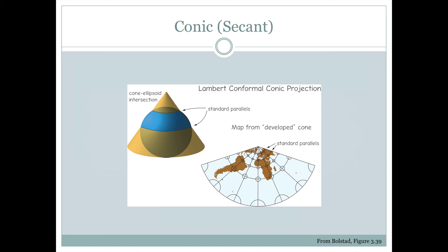If we look at what the Tissot indicatrix looks like with this sort of map projection, the two lines of standard parallel are where there is zero distortion. As we move further south, those circles get bigger and bigger, showing increasing distortion. So a conic map projection would not be good for mapping equatorial areas due to too much distortion, but it's really good for mid-latitude regions like the United States, Europe, Russia, and China.